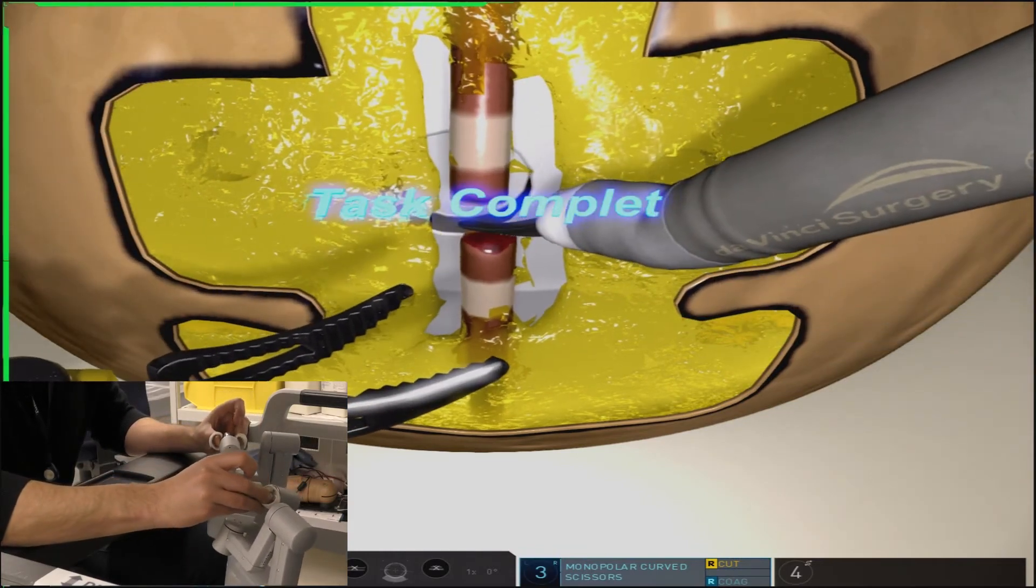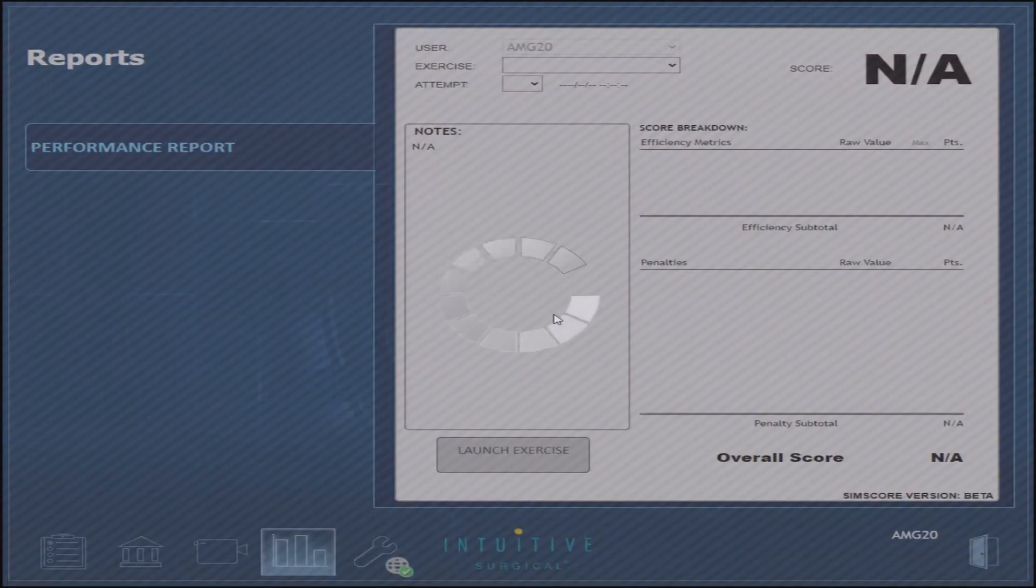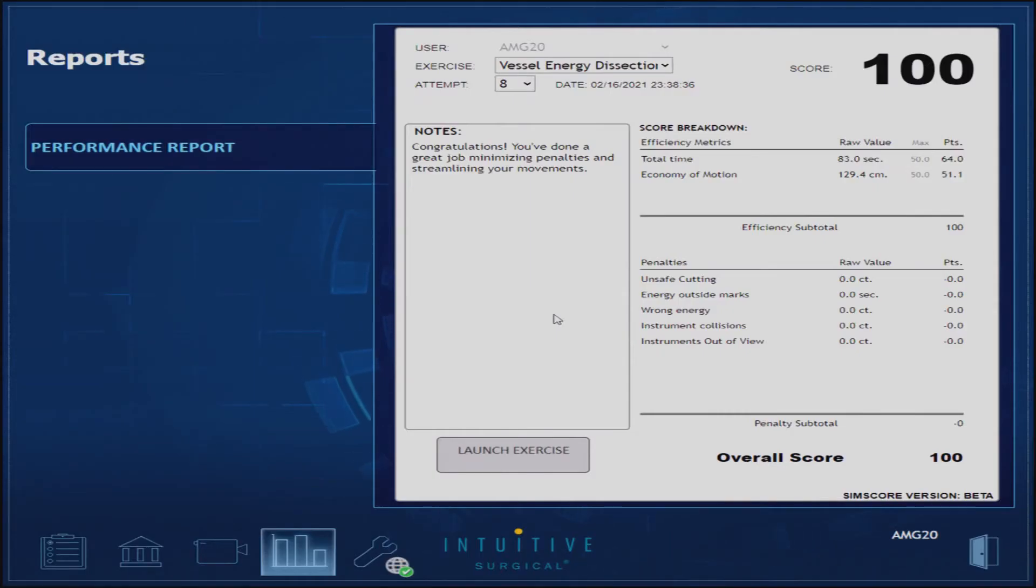Once deemed satisfactory coagulation, the exercise will prompt you to cut in the middle of your two coagulation points. Try to avoid injuring the vessel during your dissection or providing excessive tension.